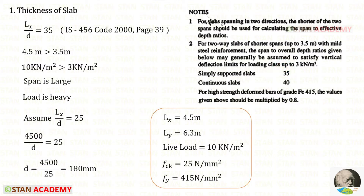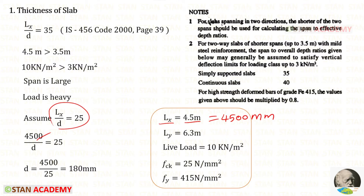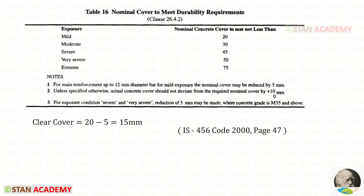We assume Lx/d = 25. Converting Lx to millimeters: 4.5 m = 4500 mm. Applying the ratio, we get effective depth d = 180 mm. Now let us find the clear cover. We open IS 456:2000, page 47.